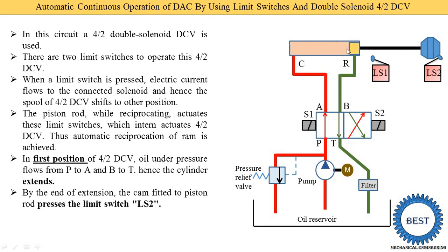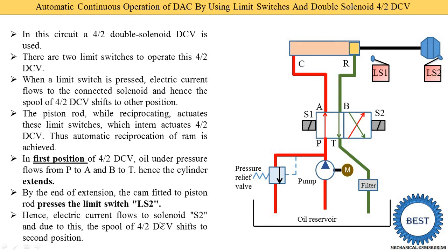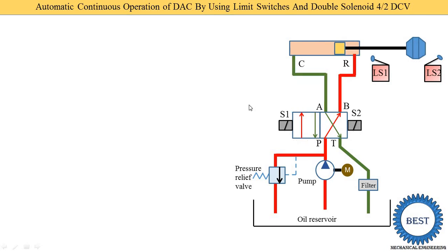When the extension stroke is over, the cam operates LS2. LS2 is connected to solenoid S2, so it supplies electric current to S2. Hence, electric current flows to solenoid S2 and the spool of the 4 by 2 DCV shifts to the second position. In the second position, the high pressure previously on the cap side now changes — the pressurized oil is now supplied from P to B.